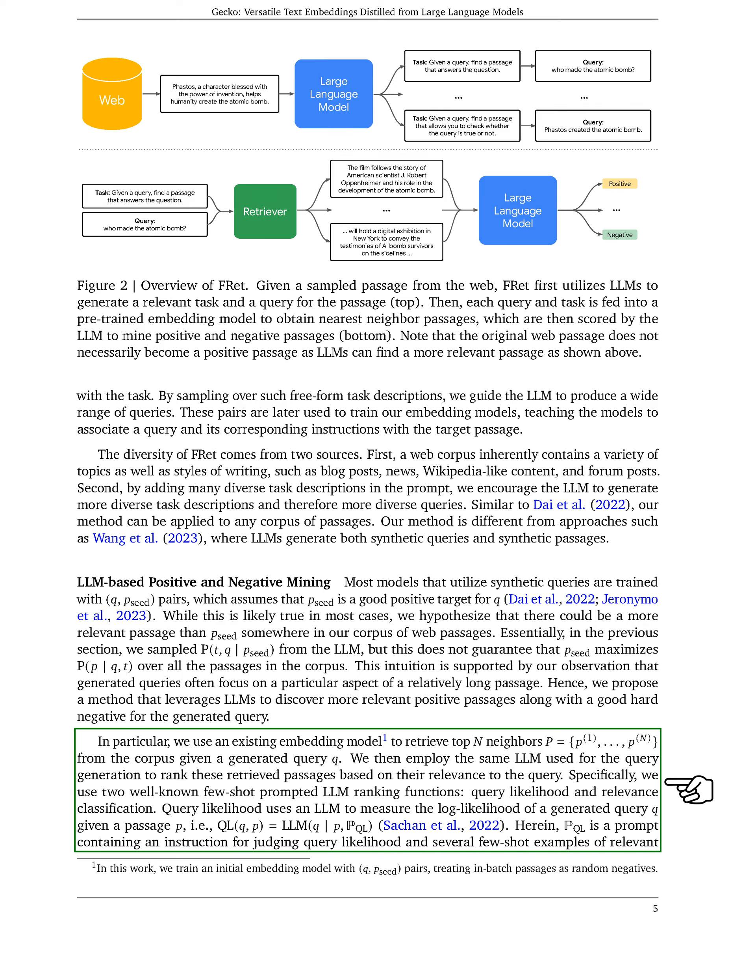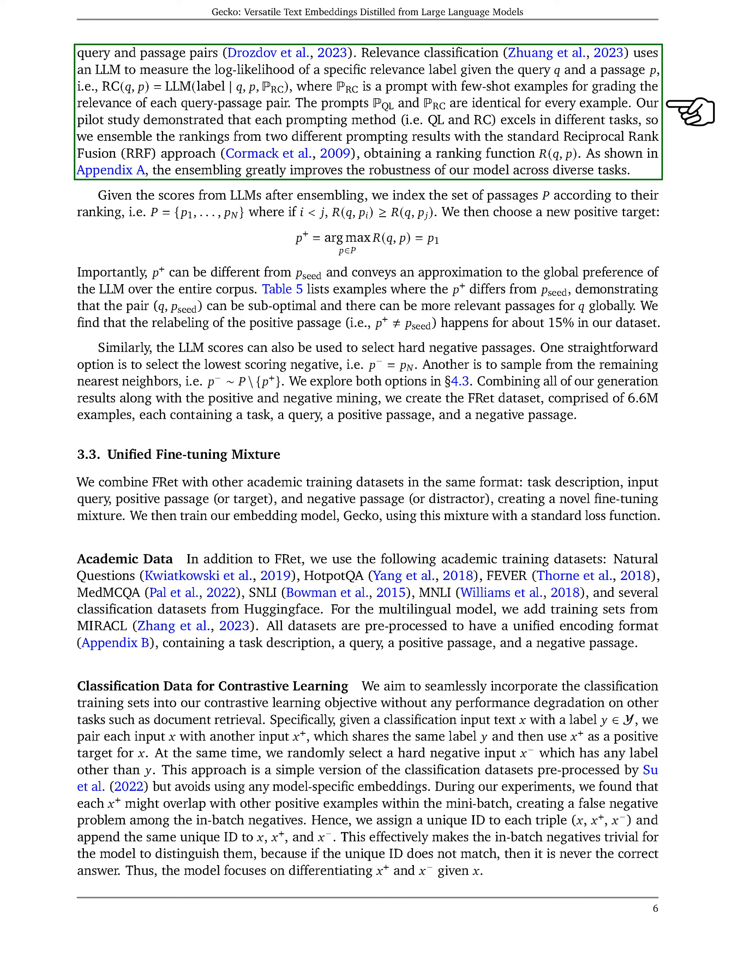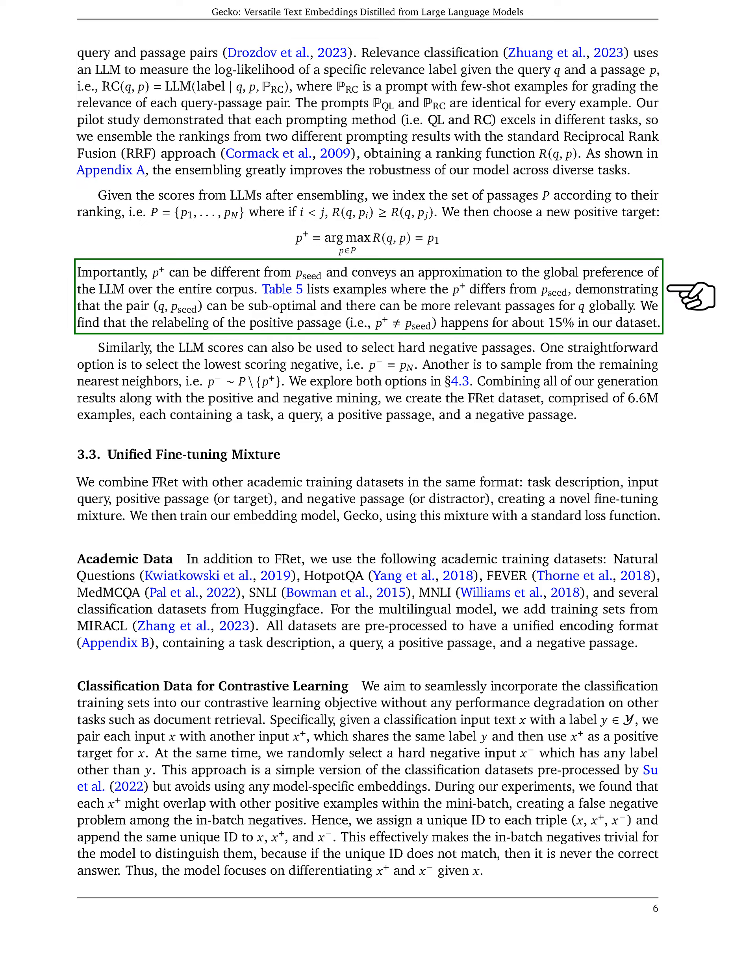Then, we use the same LLM to rank these passages based on their relevance to the query. We employ two ranking functions: query likelihood and relevance classification. Query likelihood measures how likely a generated query is given a passage, while relevance classification assesses the relevance of a specific label given the query and passage. Our study shows that both ranking methods excel in different tasks, and by combining their rankings using reciprocal rank fusion, we enhance the model's performance across various tasks.